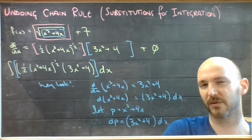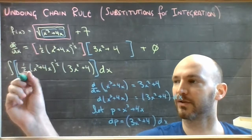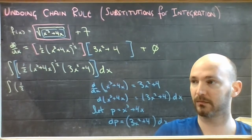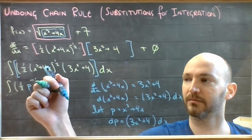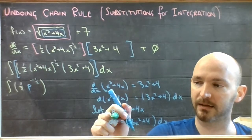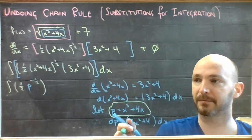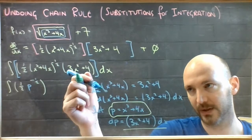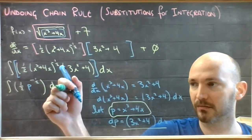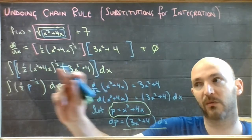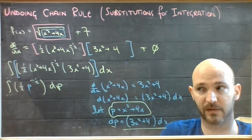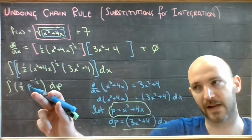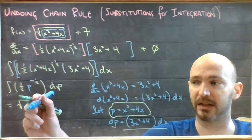If I look at this integral and start making those replacements, I would have the integral of one half times p to the negative one half. I wrote p instead of x cubed plus 4x, and 3x squared plus 4 dx is dp. I took what was a reasonably gross integral in x and rendered it down into a simple integral in p. One half of p to the negative one half is just the square root of p — that's one of our basic integrals.